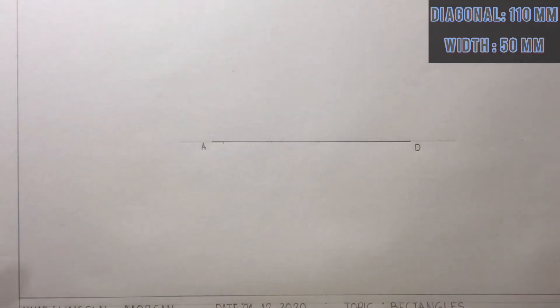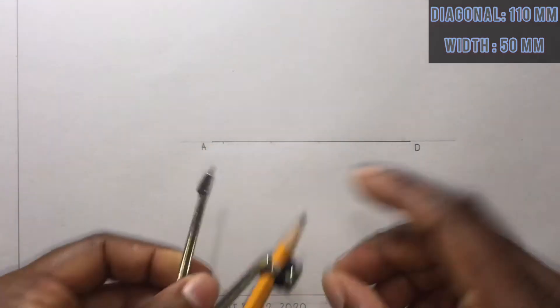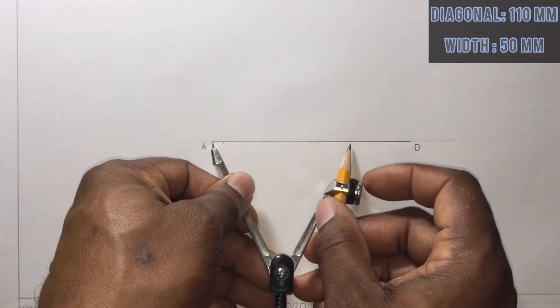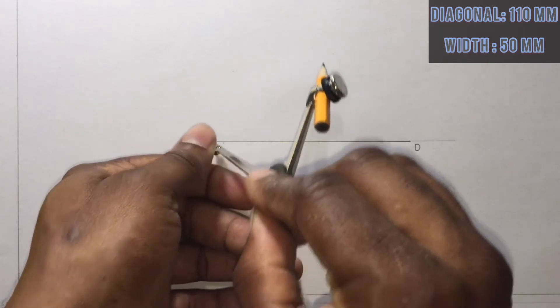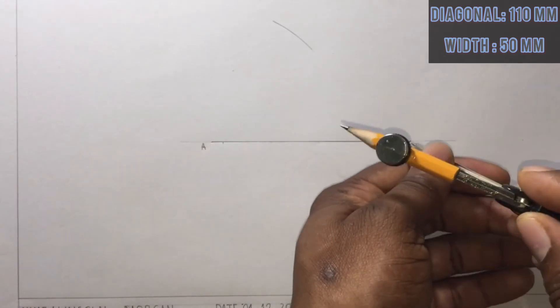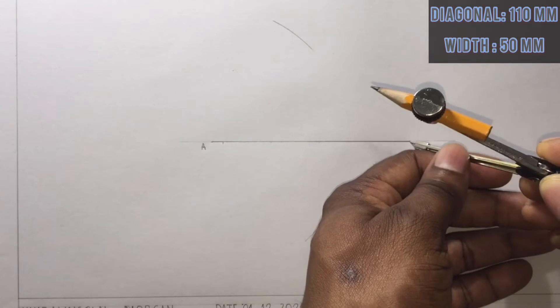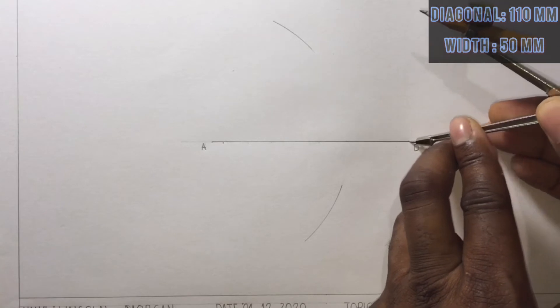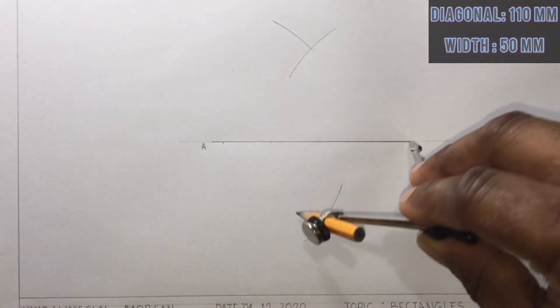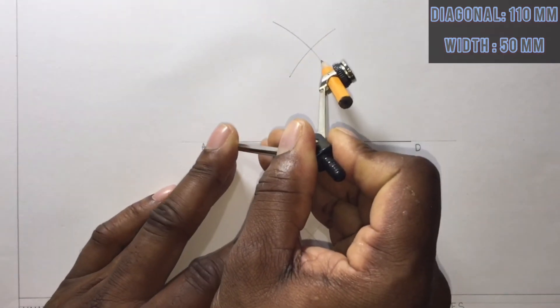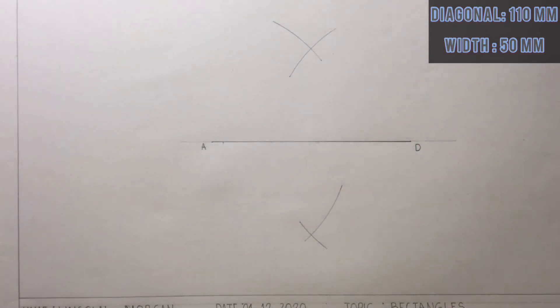I will now bisect AD by opening my compass to more than half of AD. Then I will draw arcs that will intersect each other above and below the line AD from both points, points A and point D.